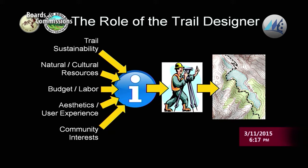The role of the trail designer: we have several folks on staff who do trail design, and we pull in outside resources from time to time. It's really taking those five disciplines — trail sustainability, natural and cultural resources, budget and labor, aesthetics and user experience, and community interests — as information the trail designer holds. Then trail design happens in the field. It's a field exercise. Maps, GPS units, and other tools help, but we do it in the field and come up with proposed alignments or alternatives to bring to the table.